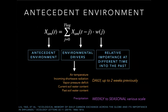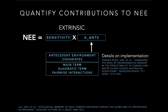We considered short-term environmental covariates including temperature, incoming radiation, VPD, and current and past soil water content at daily timescales up to two weeks previously. The reason for both current and past soil water content is that carbon response can be very different depending on whether the soil was previously wet or dry. We also consider a longer-term covariate, precipitation, implemented at varying coarseness scales from weekly to seasonal. These antecedent environmental covariates are used as main terms, their quadratic terms, and their pairwise interactions, and the sensitivity parameters that scale them are estimated by fitting the model to the data.